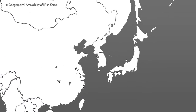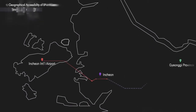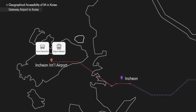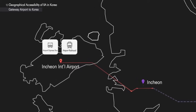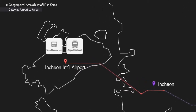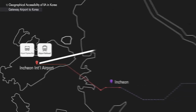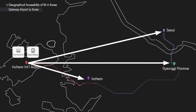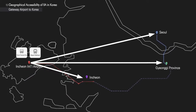Geographically, Incheon International Airport is located near the Seoul metropolitan region. However, with only Incheon International Airport serving long-haul international flights in Korea, it can be said that Incheon International Airport is the gateway airport to Korea. With close to a quarter of Korea's population residing in Seoul, Incheon, and Gyeonggi Province, and express buses and trains connecting other major cities with Incheon International Airport,